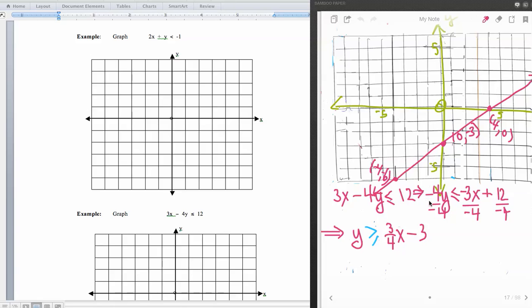Okay, so first of all, we solve 3x minus 4y less than or equal to 12 for y. So when we come to getting rid of the numeric coefficient of y, notice we have to multiply by a negative 1 fourth, or divide by a negative 4. When you do that, remember the inequality must reverse.